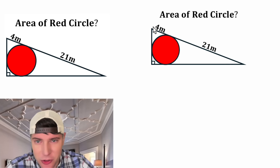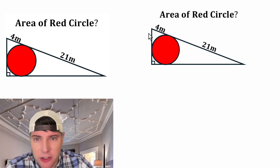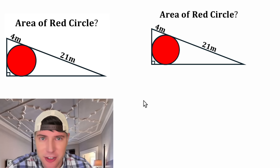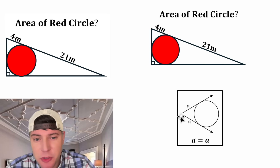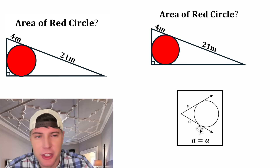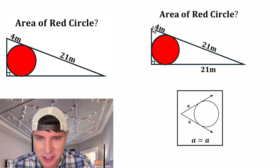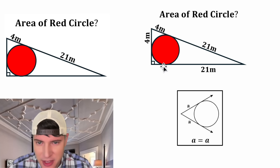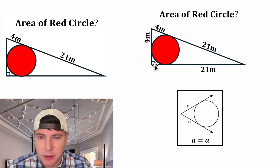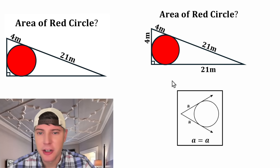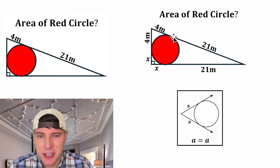For any inscribed circle, each of the sides of the triangle are tangent lines to that circle. Using the property of tangents to a circle, anytime two tangent lines intersect at a point, the two segments are always equal. So if this is equal to 21, this will also equal 21. And if this is equal to four, this will also equal four. This and this are unknown, but both distances are equal to each other — let's call them both x.